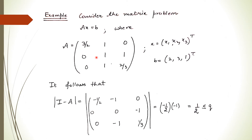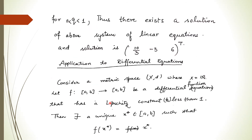Now let's see an example. Suppose we have a given system of equations with specified right-hand side coefficients and coefficients of unknowns. If we compute the determinant of (I - A), we get 1/2, which is less than q where q < 1 — strictly less than 1. So by the above theorem, this system has a solution, moreover a unique solution, and we can solve it to obtain the solution of this system.